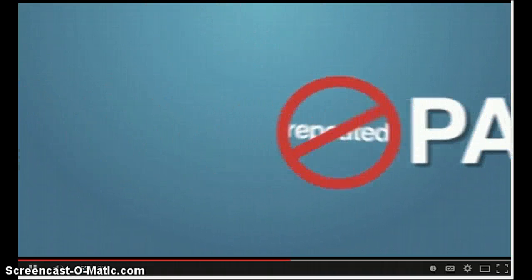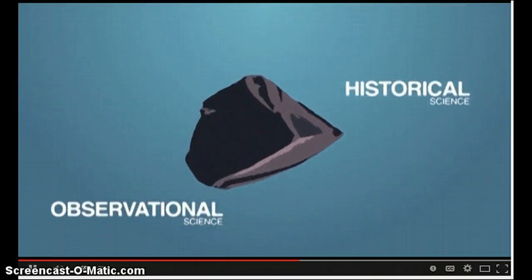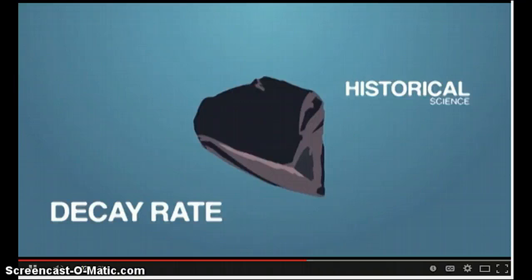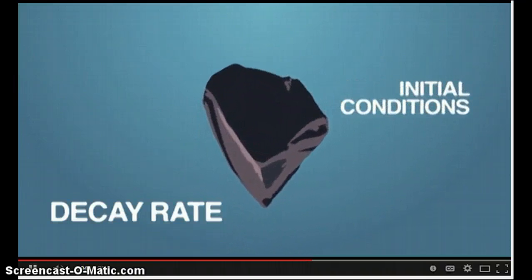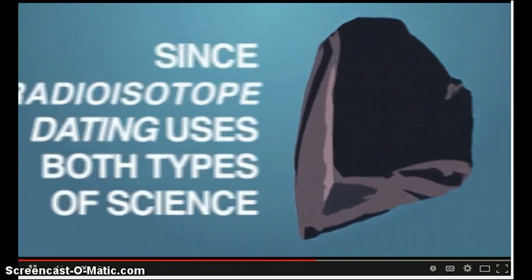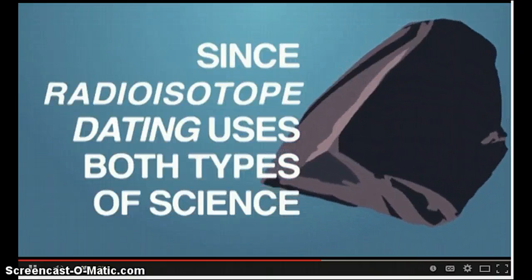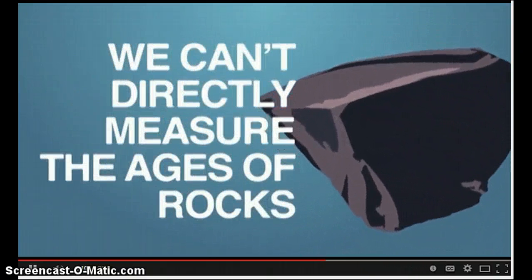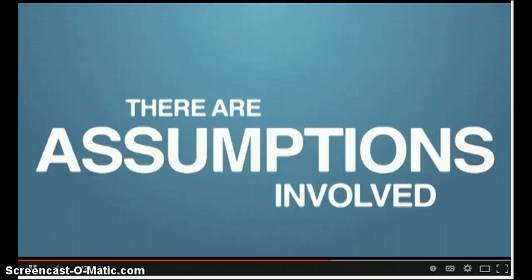Historical science deals with the things in the past and therefore it cannot be repeated and tested. Dating methods require both types of science because in order to get accurate rock dates, one would have to accurately know both the decay rate and the initial conditions of the rock sample. Since radioisotope dating uses both types of science, we can't directly measure the ages of rocks. There are assumptions involved.